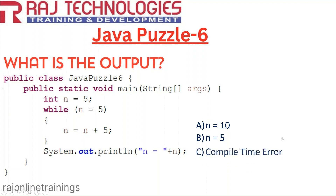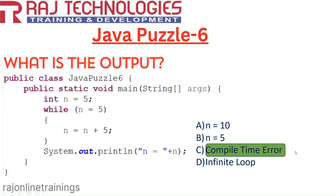The other options are compile time error and infinite loop. The correct answer for this puzzle is compile time error. The reason is that in Java, when you write a condition, it must be of boolean type — it should evaluate to true or false only. In this example, n equals 5 is a numeric expression; its type is integer. But the expected type is boolean, so the error is: 'expected boolean but found integer.' That's why we get a compile time error.